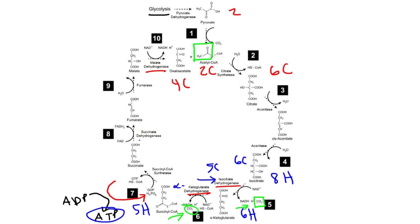In step eight, we have another dehydrogenase enzyme, which means that we're going to remove hydrogen from succinate to make fumarate. So succinate has six hydrogen atoms, fumarate has four,